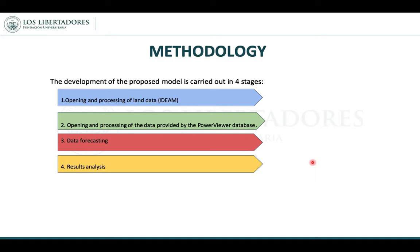Our model is delivered in four stages. The first stage is opening and processing of land data from EDAM. The second is opening and processing of data provided by the NASA Power databases. The third is data forecasting, and the fourth stage is results analysis.